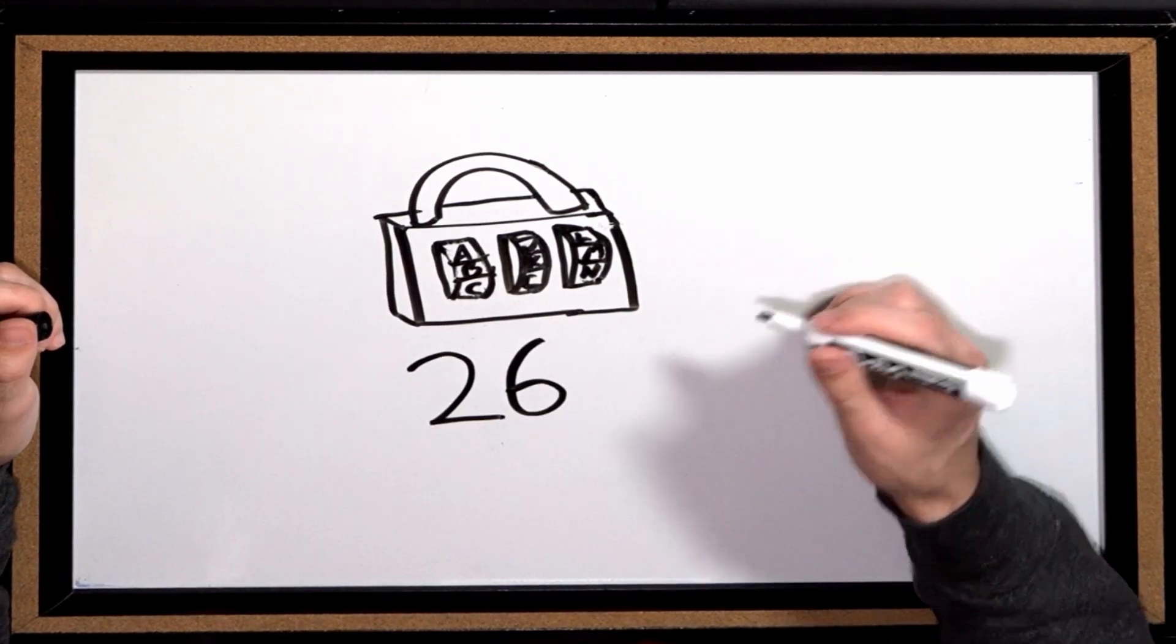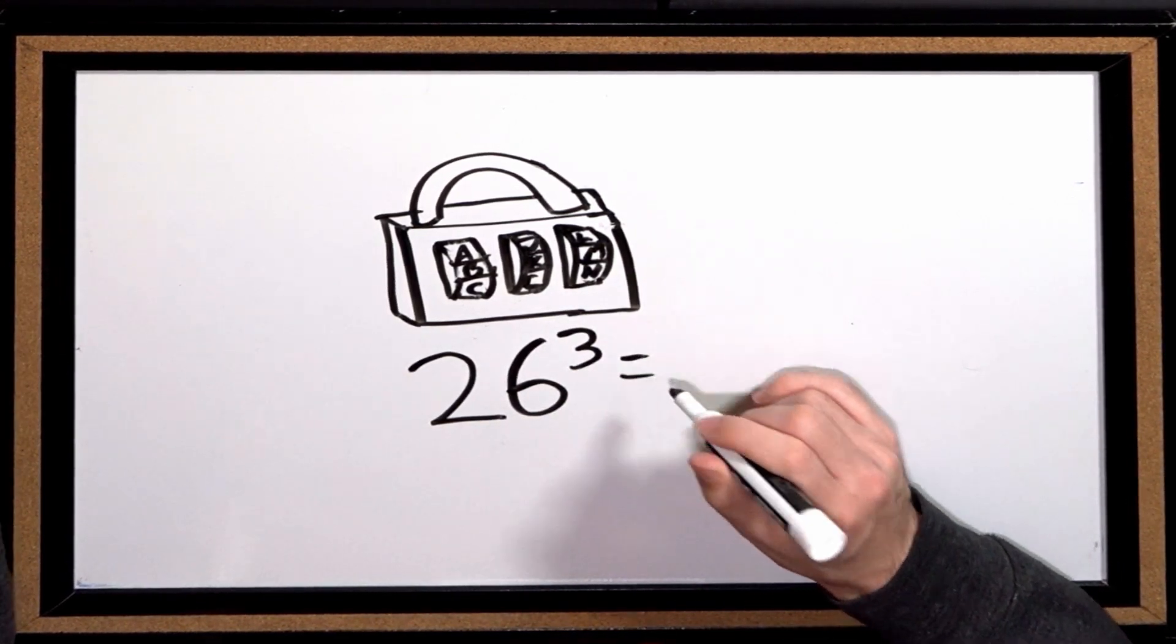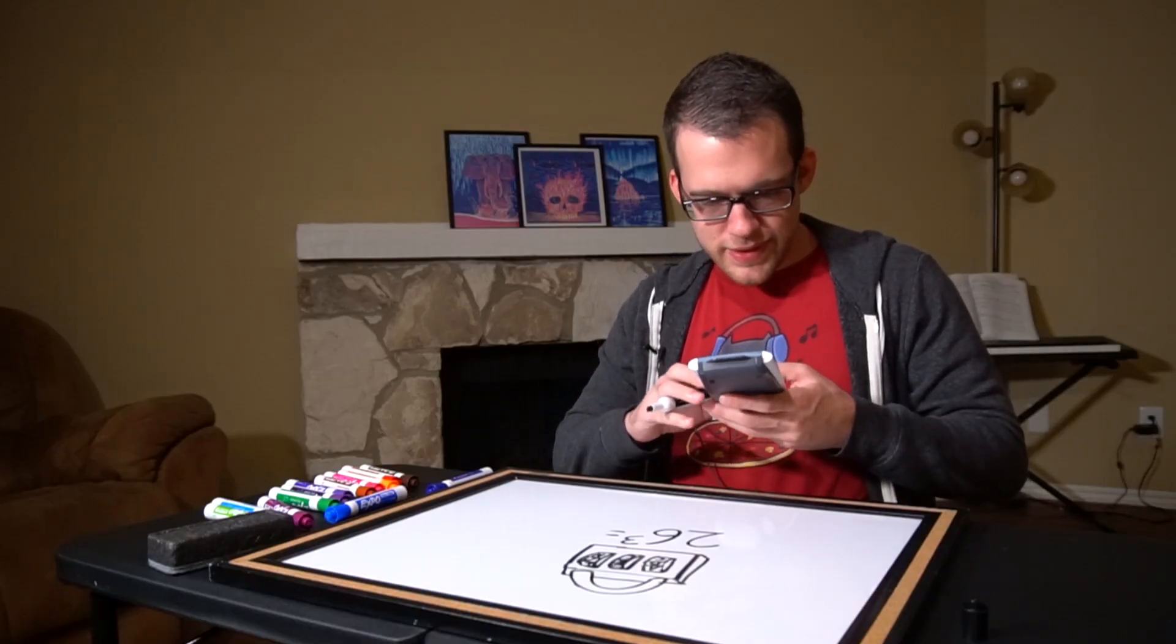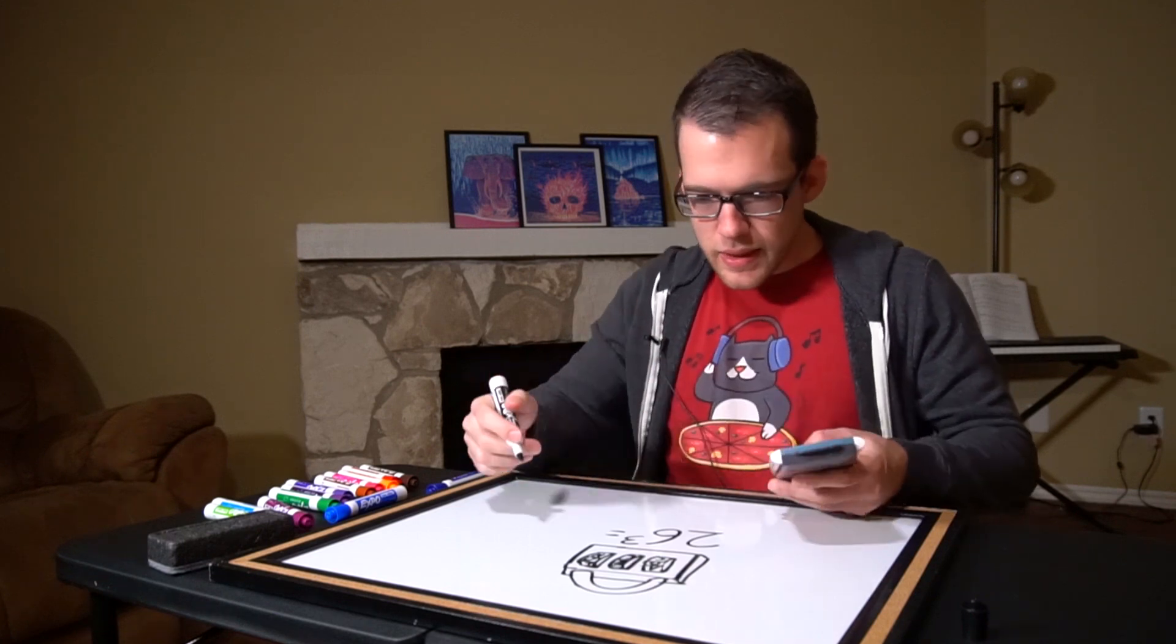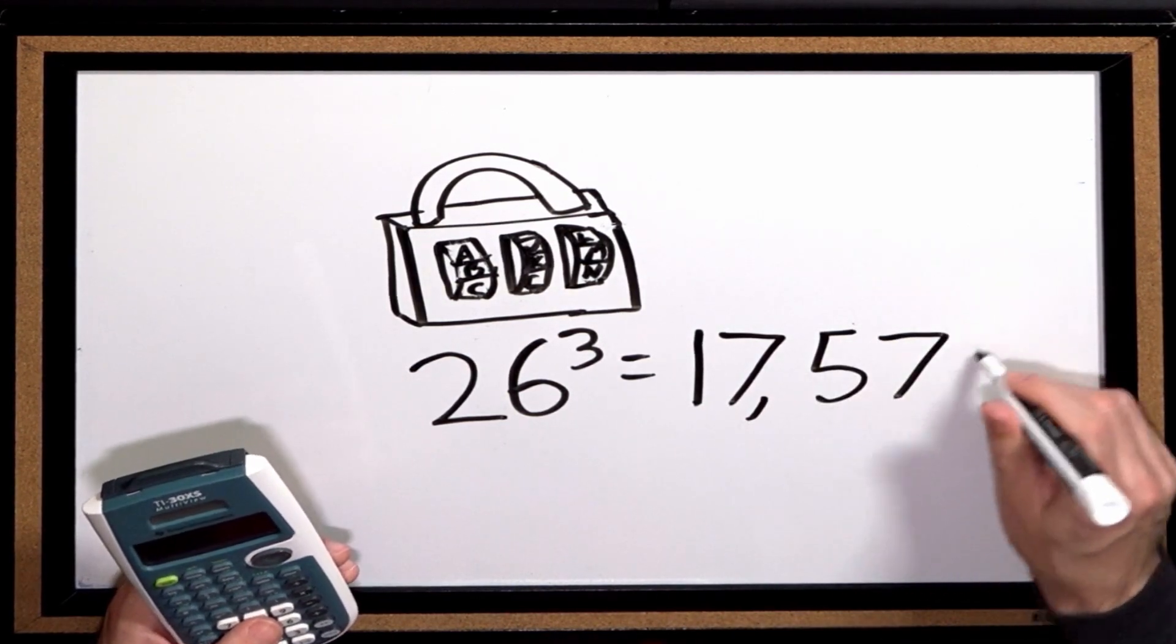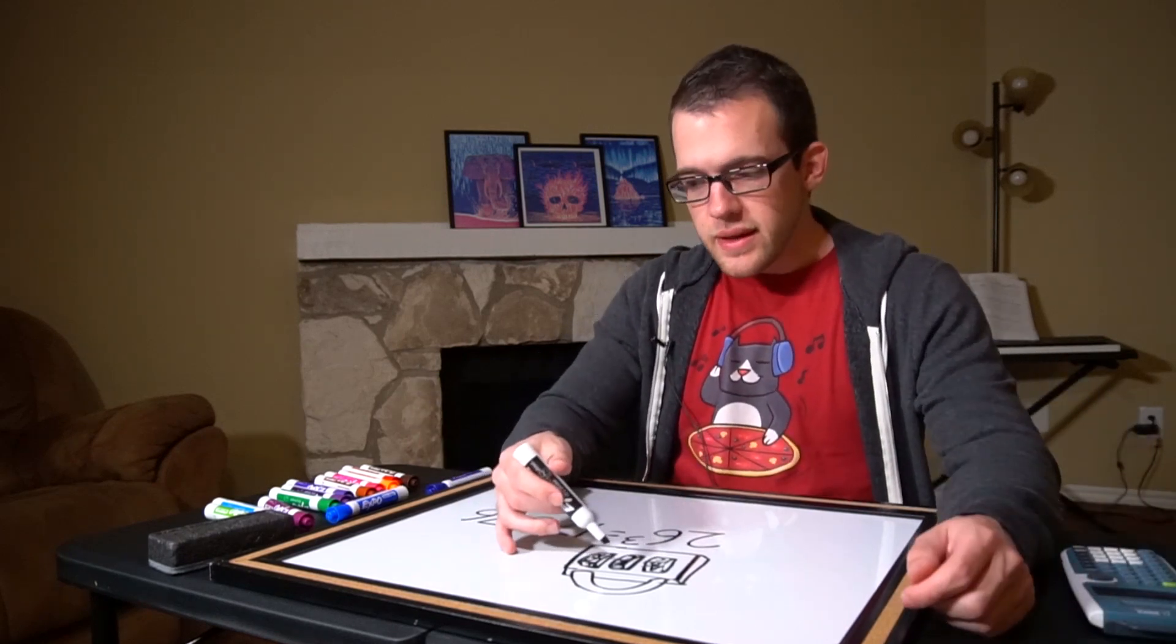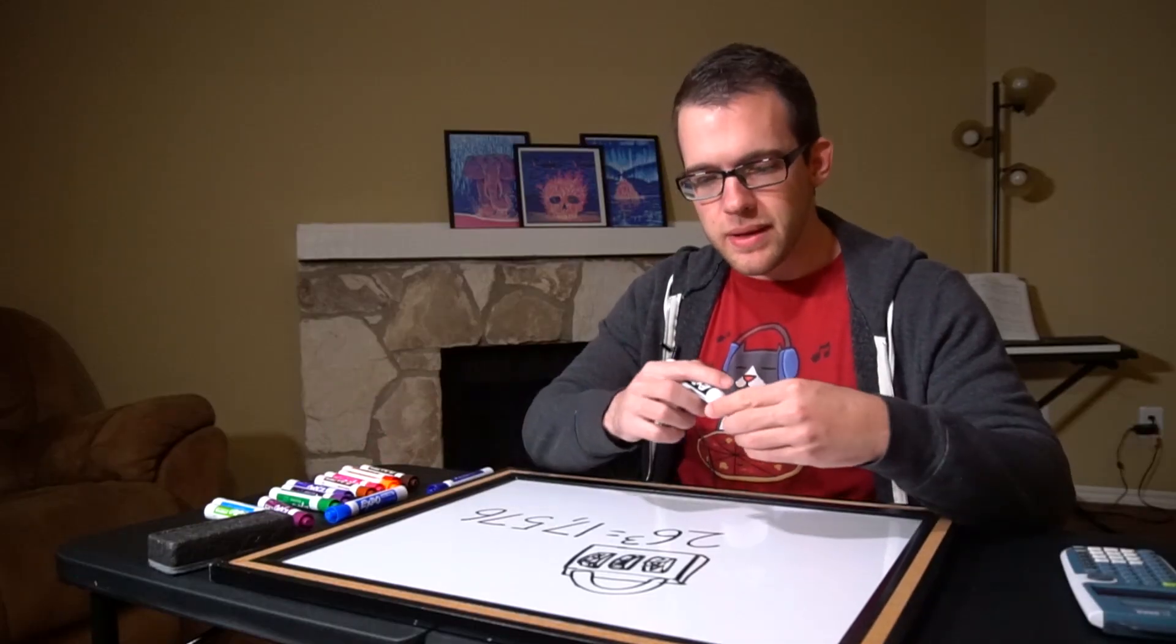So the number of combinations now: 26 to the power of three, which equals probably a really big number. 26 to the power of three equals 17,576. So any combination of three different letters has 17,576 different possibilities.